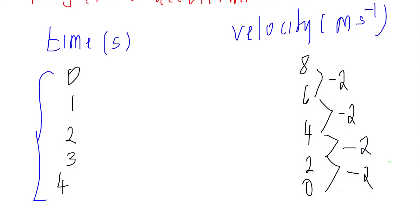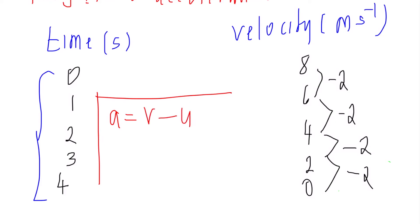The acceleration is negative 2 — it is constant negative acceleration. The velocity decreases by 2 meters per second each second, giving a negative 2 meters per second squared.